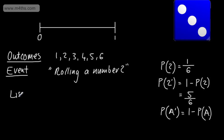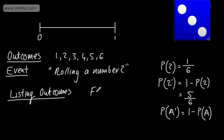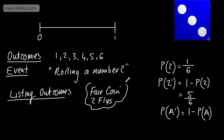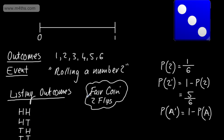Let's look at listing outcomes. Often when we have a range of possible outcomes, it's more efficient to list them. So I'm going to have a fair coin and flip it twice, and consider the possible outcomes. We do this systematically. On the first flip a head, on the second a head. First a head, second a tail. Third possibility: a tail on the first, a head on the second. And finally, a tail on the first and a tail on the second. So I've listed all the outcomes of flipping this coin twice.